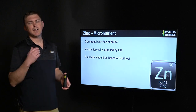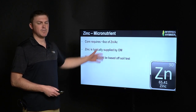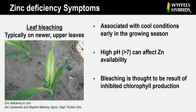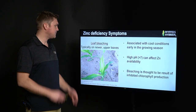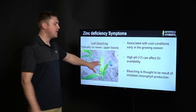Zinc is again typically supplied by organic matter in those soils, and if we are making zinc applications they absolutely need to be based off of soil test results. Typical zinc deficiency symptoms are kind of similar to sulfur deficiency symptoms but a little more pronounced — you'll see that the bleaching or bands show up much wider. We'll typically see this on those newer leaves first because they're the ones that are actively growing. This is again associated with cool conditions early in the growing season where growth can be slowed and mineralization of zinc from organic matter can be inhibited. We can also run into deficiency symptoms when we have high pH soil — pH greater than seven can cause tie-up issues with zinc. This bleaching is thought to be the result of inhibited chlorophyll production in that new actively developing leaf.